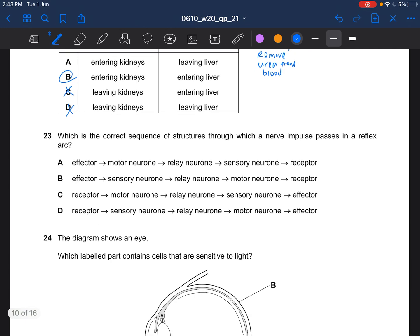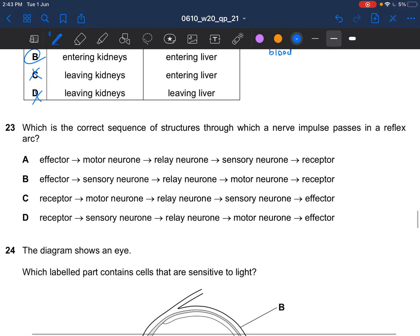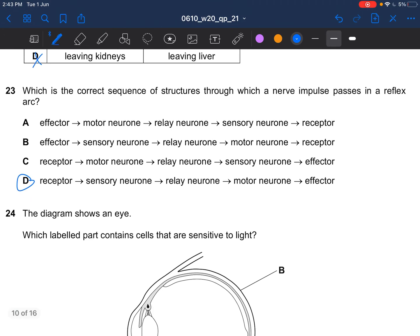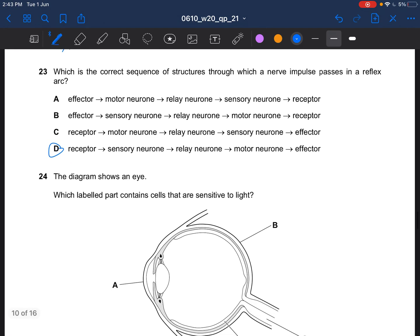Next question. Which is the correct sequence of structures through which a nerve impulse passes in the reflex arc? The receptor is the one that detects and sends the stimuli. Then it will pass it to sensory. The answer is D. The effector would then carry out the action.